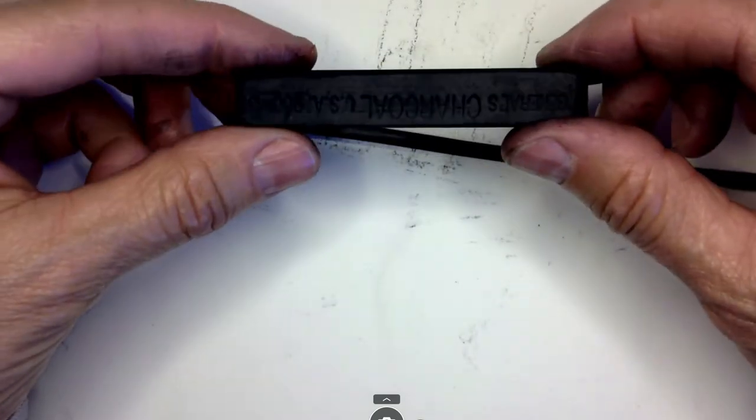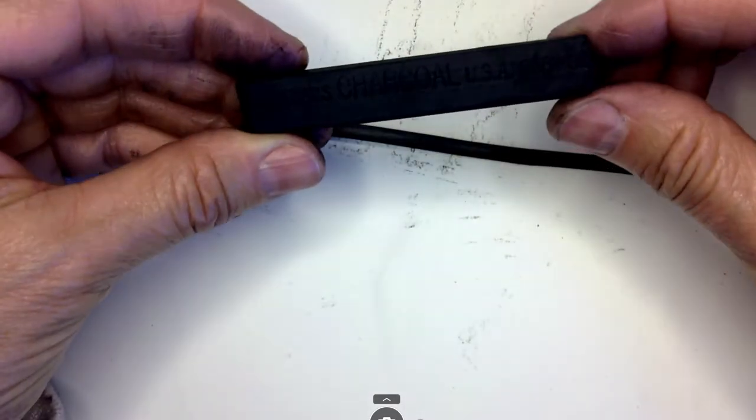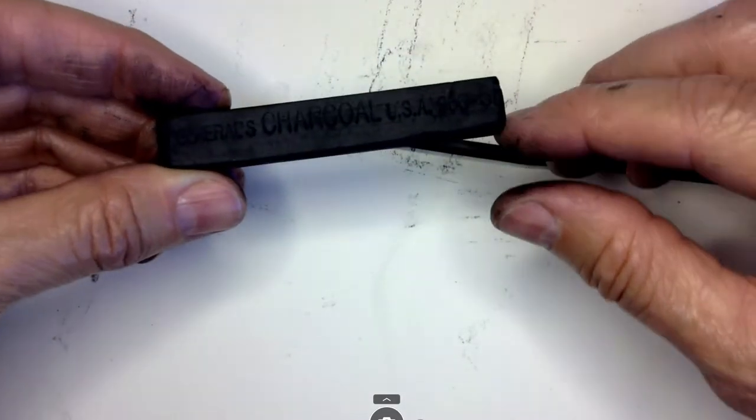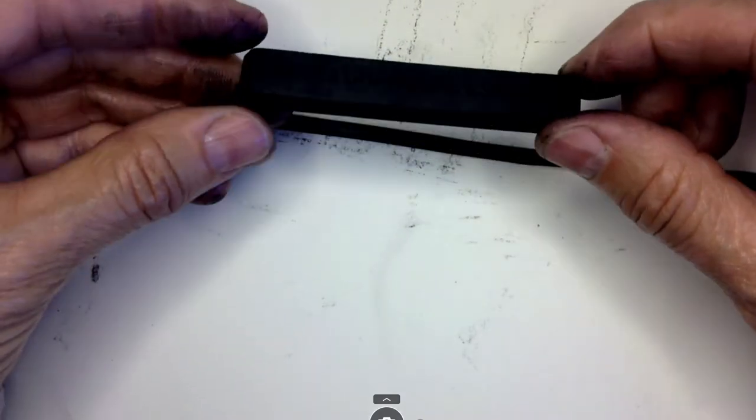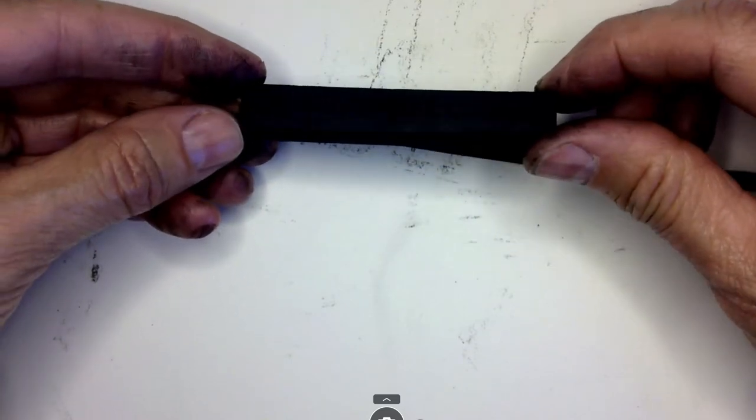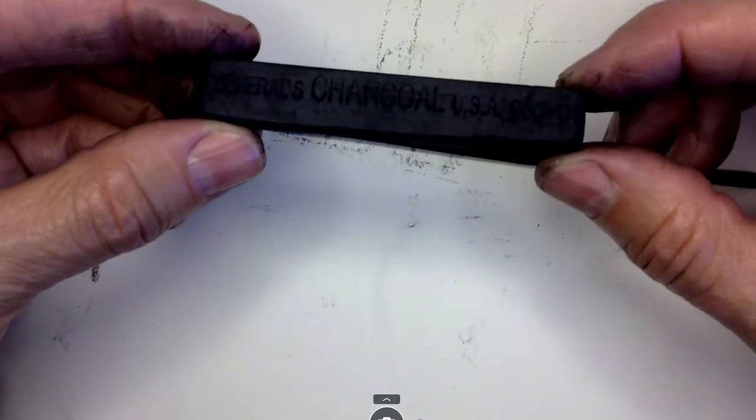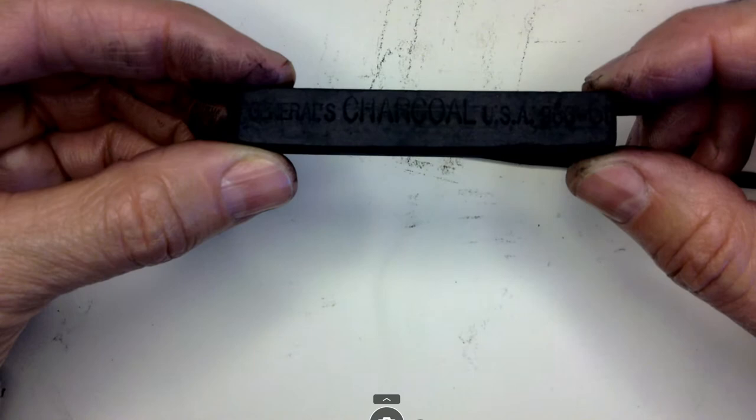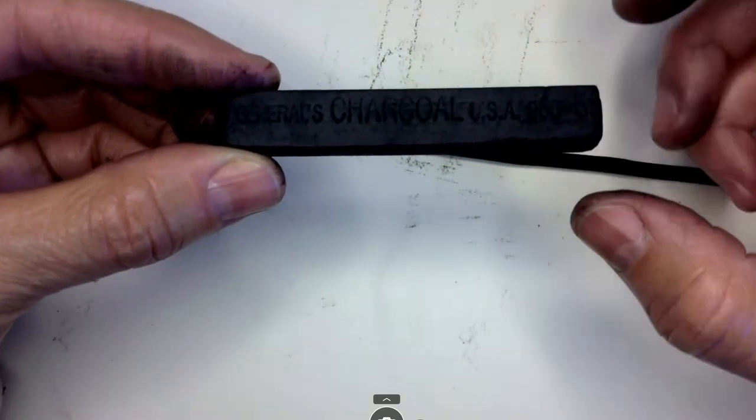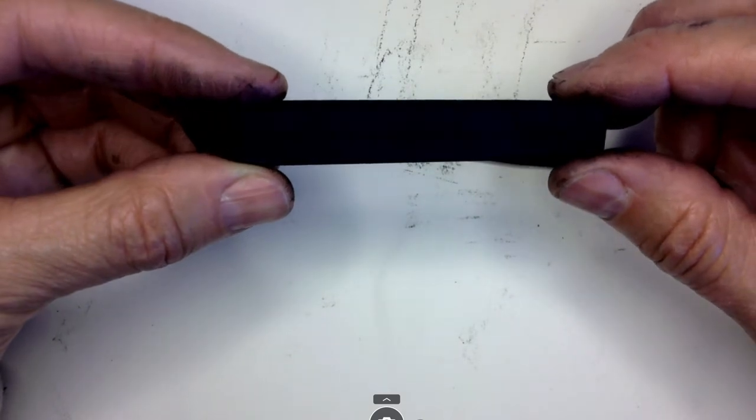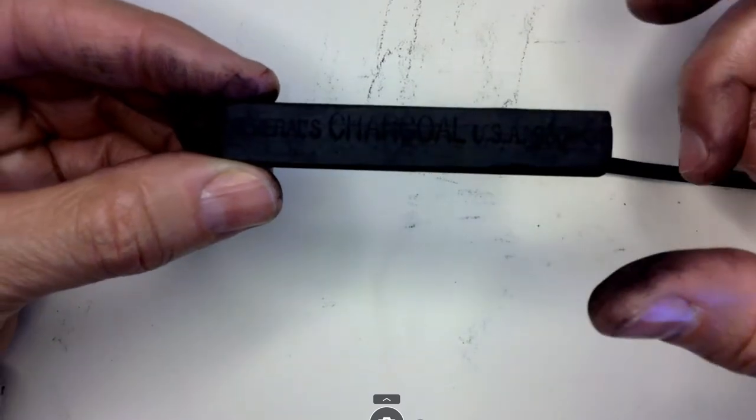The compressed charcoal—this is a 6B compressed charcoal stick. I recommend this because it's soft and has a nice velvety consistency. Some other compressed charcoals have a more waxy consistency, aren't as velvety, and are harder to work with when doing portraits.